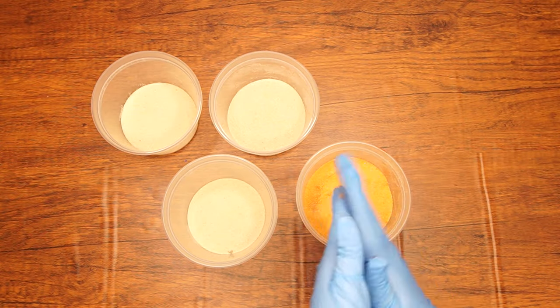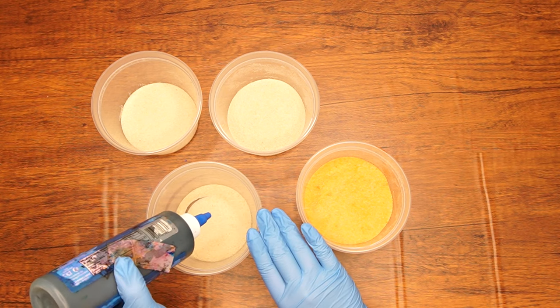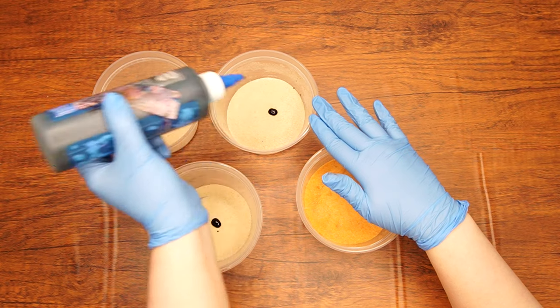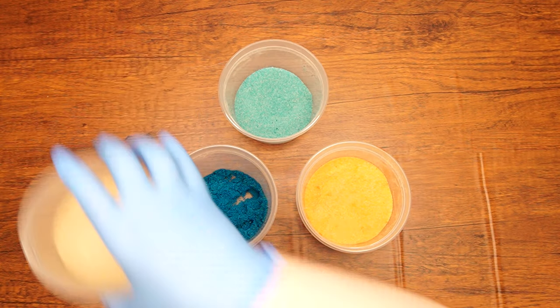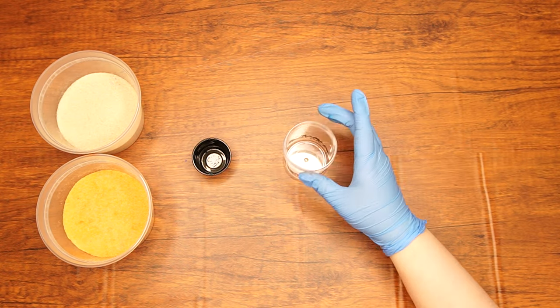Dye the first container orange by adding three drops of gel food coloring and mixing well with your hands. Next, squeeze three drops of blue coloring into the second container, two drops into the third and one drop into the fourth. Mix each container well until the color is distributed evenly amongst the sand.